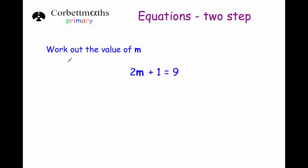The first question says work out the value of m. It says 2m plus 1 equals 9 — remember 2m means 2 times m. So we've times by 2 and then added 1. We want to get m on its own, so we want to get rid of the times by 2 and the plus 1. Because the plus 1 was done last, we're going to get rid of it first.